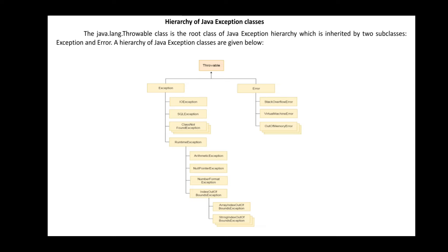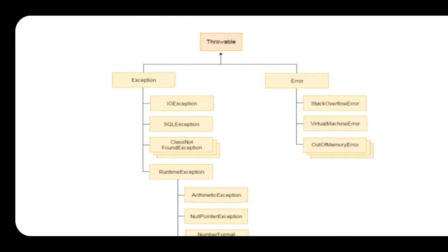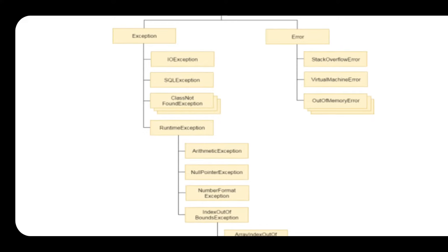The java.lang.Throwable class is the root class of the Java exception hierarchy, inherited by two subclasses: Exception and Error. Exception means abnormal program problems, and Error means machine-level problems. The throwable class redefines these two subclasses.